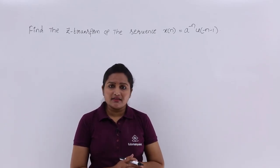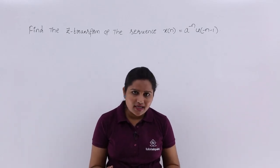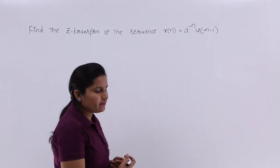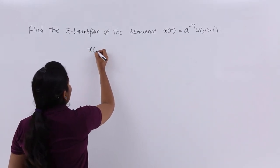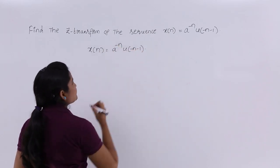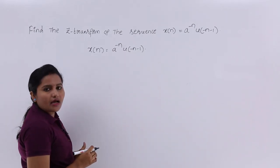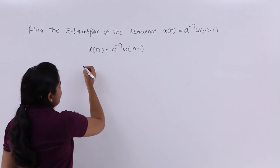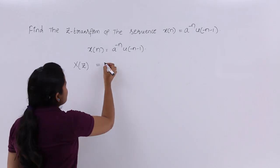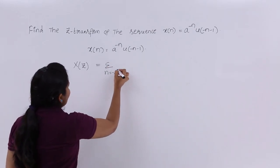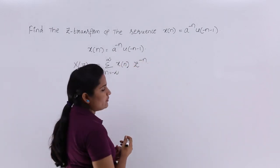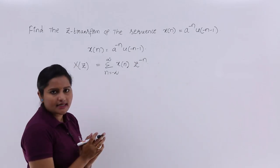If they give a signal like this and you are asked to find the Z-transform, you can definitely use the same Z-transform equation, but in a different way. The given signal x of n is equivalent to a power minus n, u of minus n minus 1. To find x of z, we use the equation: x of z equals summation from n equals minus infinity to infinity — this is the equation for calculating Z-transform.